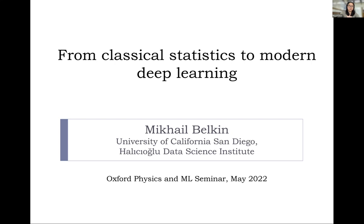Some of his recent work has been concerned with understanding statistical phenomena observed in deep learning. One of the key recent findings is the double descent risk curve, which extends the textbook U-shaped bias-variance trade-off curve beyond the point of interpolation. So without further ado, let's start the seminar.